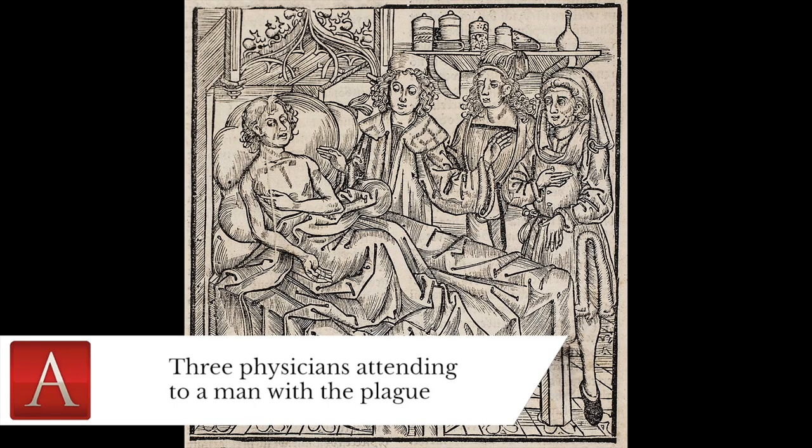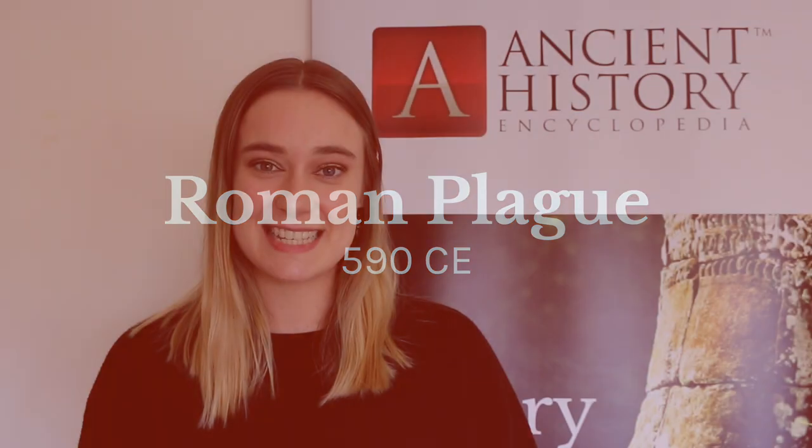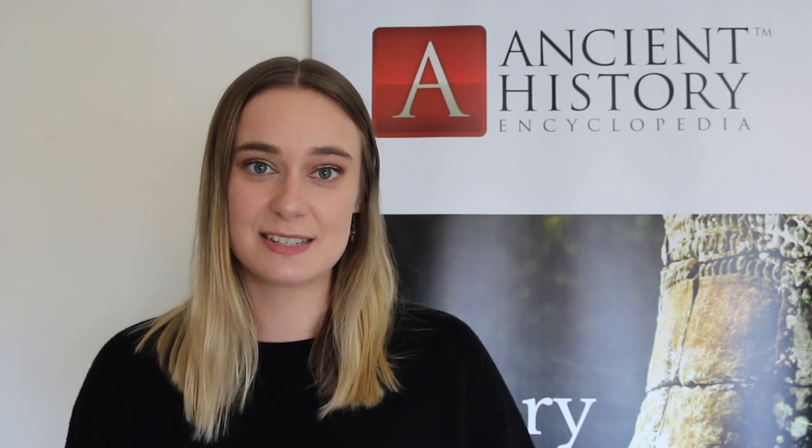The empire survived the outbreak, however, greatly diminished, having lost 25 percent of its population. The Roman plague of 590 CE was a continuation of the Justinian plague, centralised in Rome with no official death toll. Just like the Justinian plague, it was a combination of all three types of plague, with the bubonic strand being most prevalent.